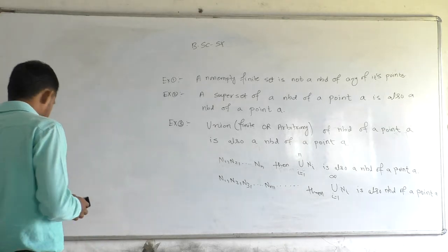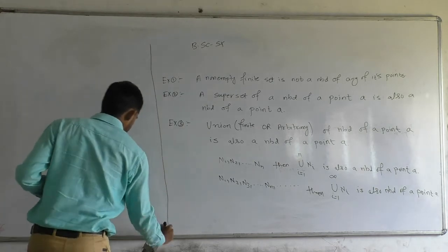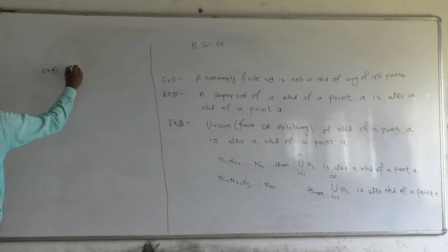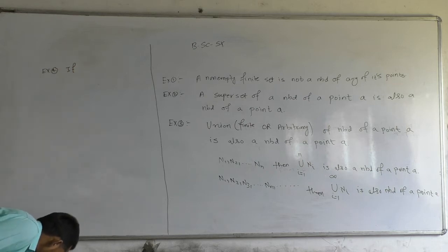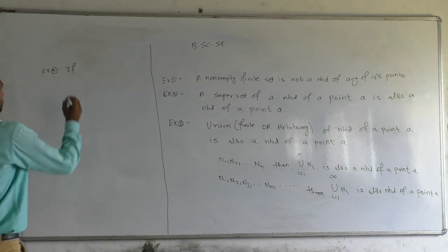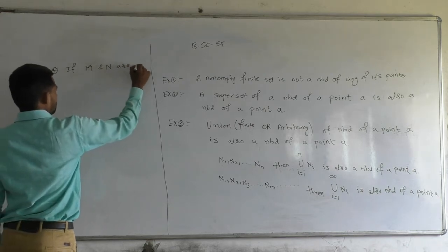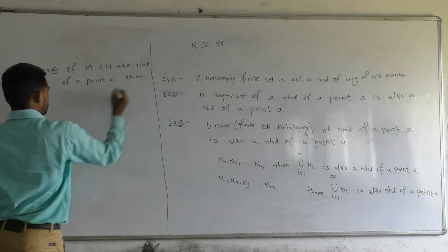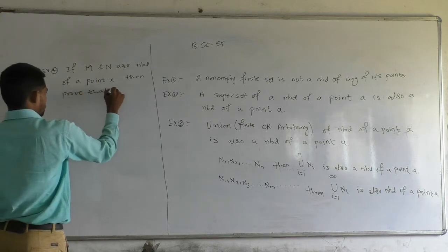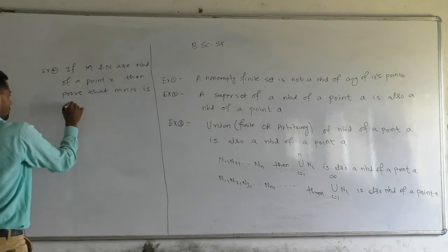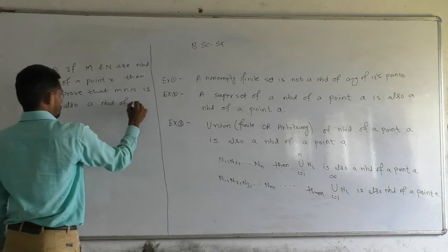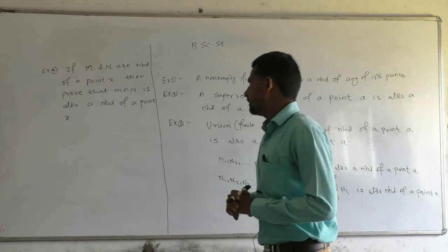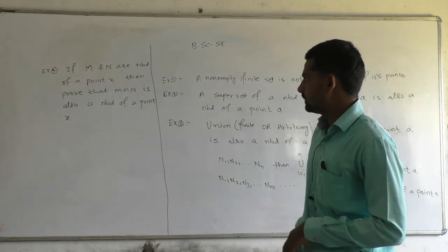Example three was about union. Now example four is about intersection: if M and N are neighborhoods of a point X, then prove that M intersection N is also a neighborhood of a point X.